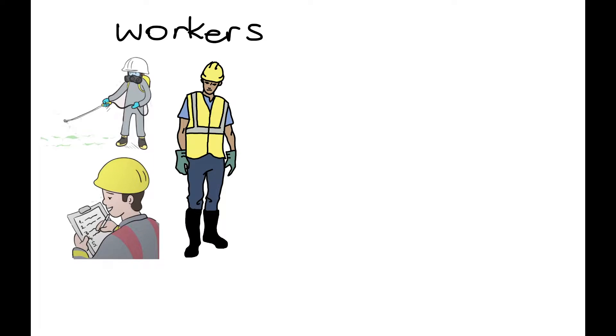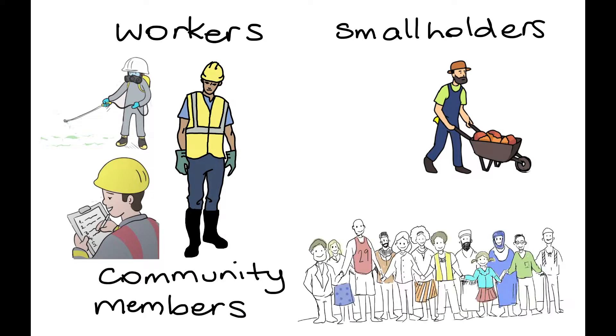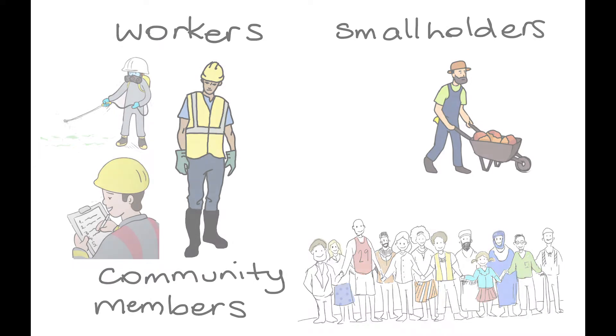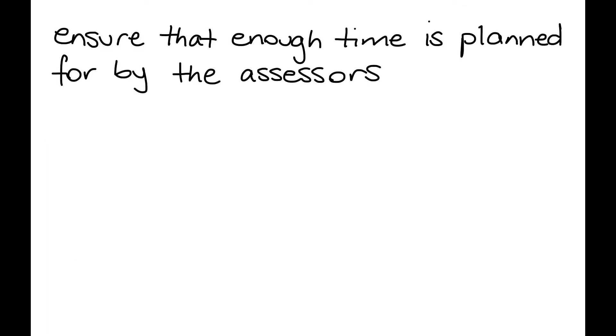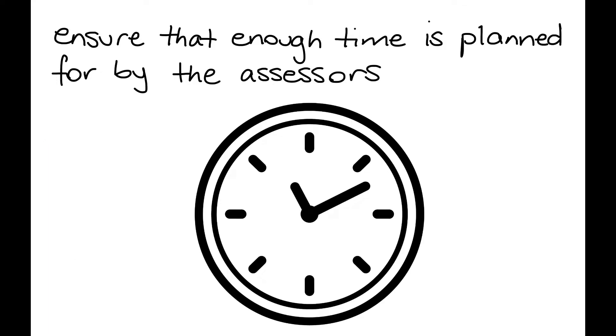Social auditing. An important element in addressing social challenges that may be faced by an organisation is through stakeholder verification and conducting interviews with end users, which include workers, smallholders and community members. It is also important to ensure that enough time is planned for by the assessors during the audit duration to guarantee this.